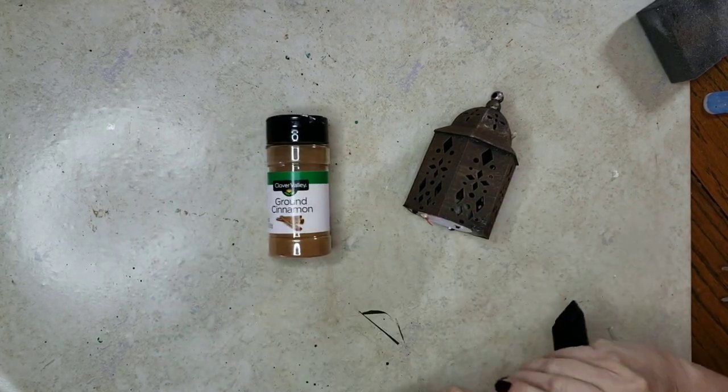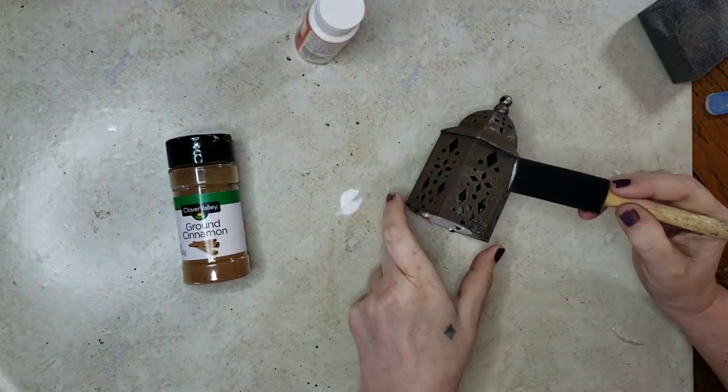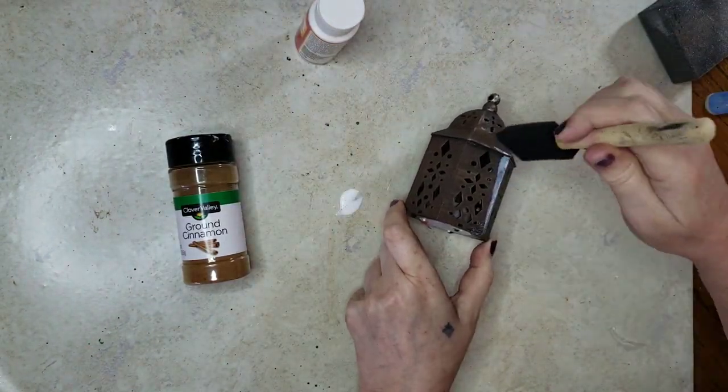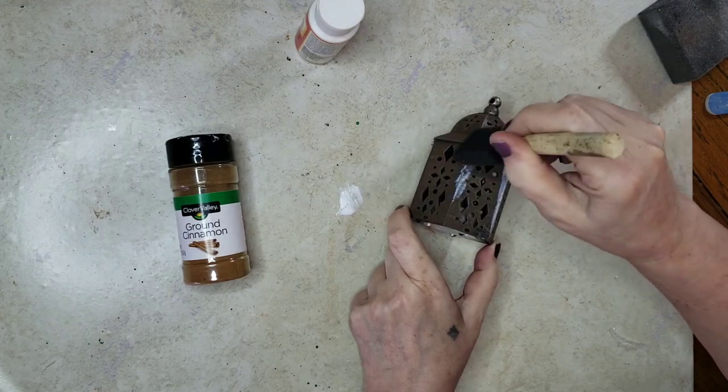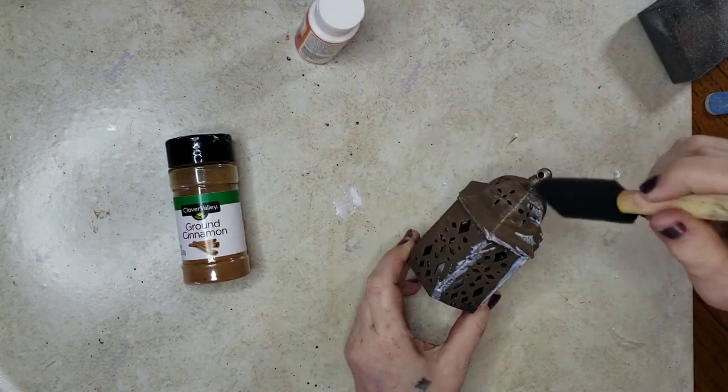I'm just using gloss Mod Podge and dabbed it here and there where I thought rust might develop on something like this, mostly getting corner pieces.